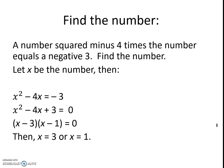Well, let x be the number, then x squared minus 4x equals negative 3. That's what it tells us in the problem. A number squared is our x squared, 4 times the number is 4x, and we say it's a minus, so it must be a minus, and equals a negative 3.